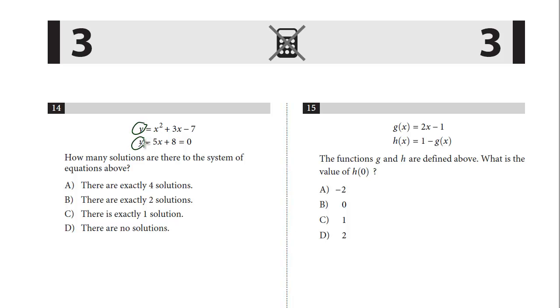And so the second equation, we can express, what we can do is we can add 5x to both sides and we can subtract 8, and so we get y equals 5x minus 8. And so now we have them both in terms of y and we just set these equal.